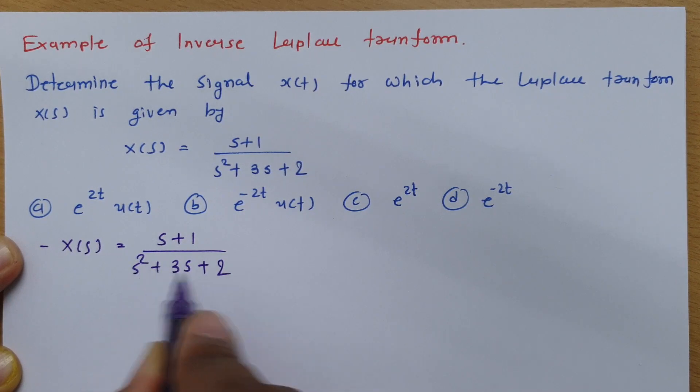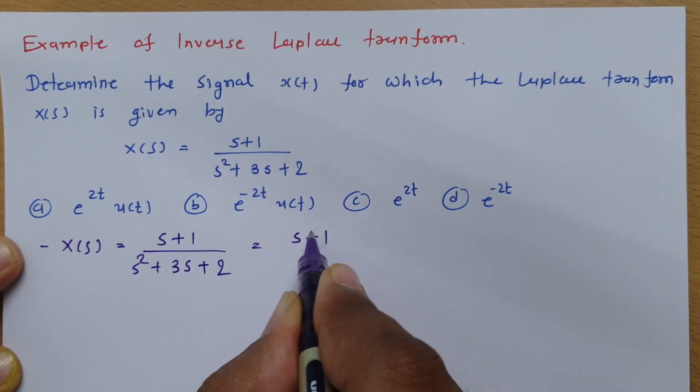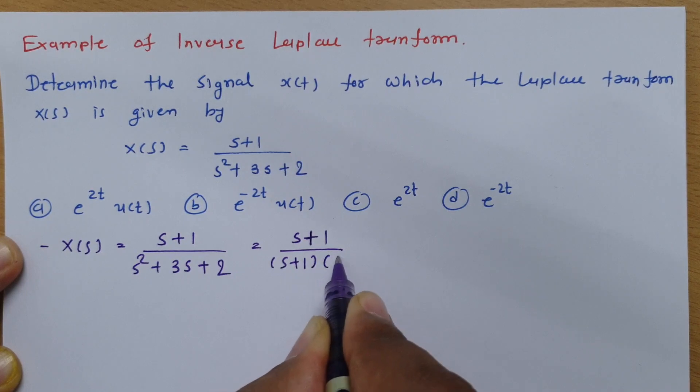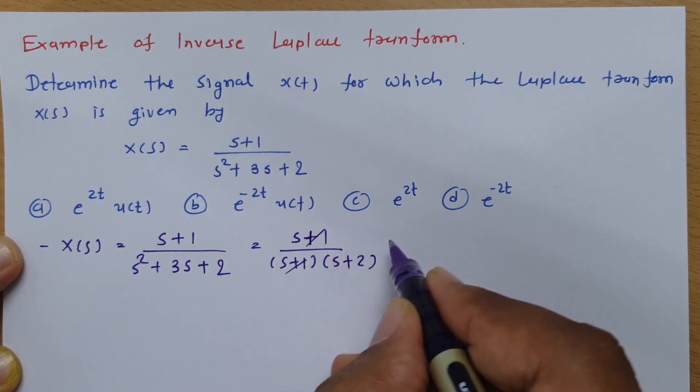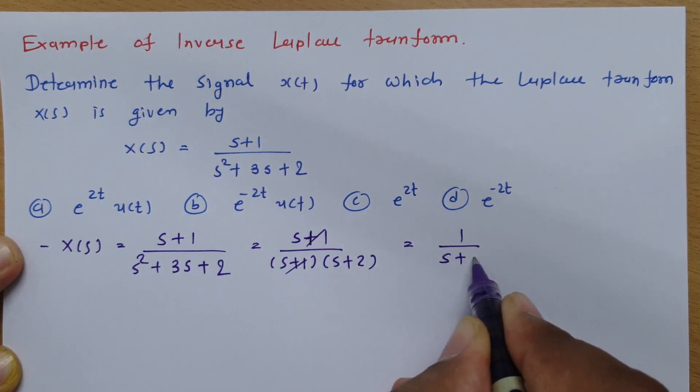So ultimately if you separate this then you will be getting this as (s+1)/(s+1)(s+2). So s+1 will get cancelled. So this is actually 1/(s+2).